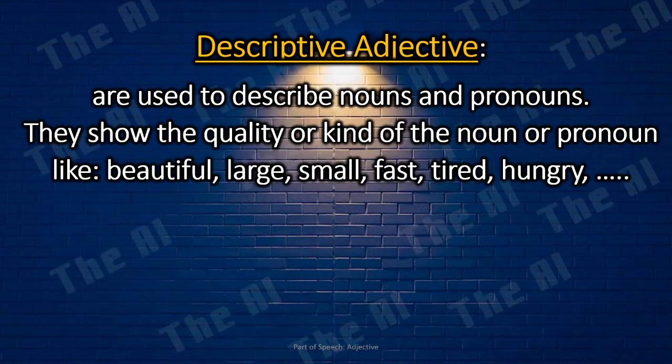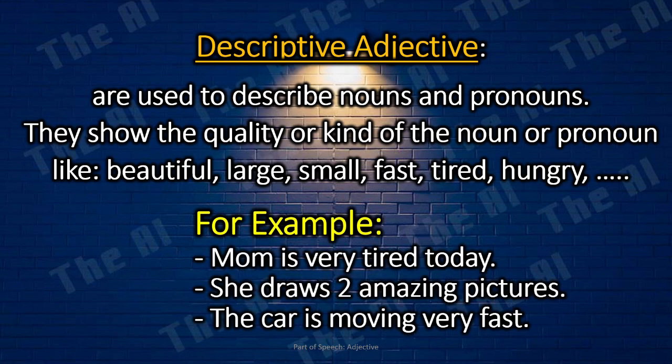Descriptive Adjective. Descriptive adjectives are used to describe nouns and pronouns. They show the quality or kind of the noun or pronoun, like beautiful, large, small, fast, tired, hungry, etc. For example: Mom is very tired today. She draws two amazing pictures. The car is moving very fast.